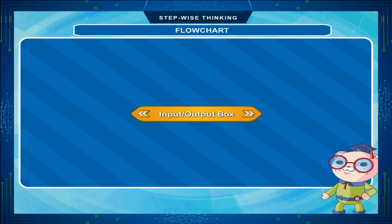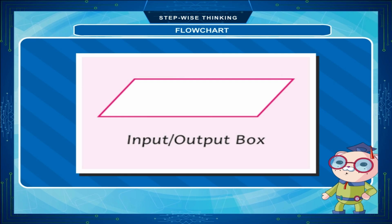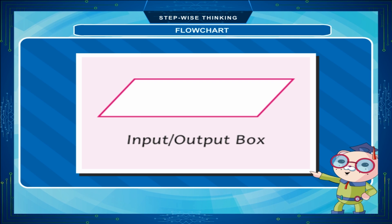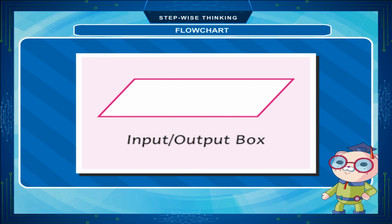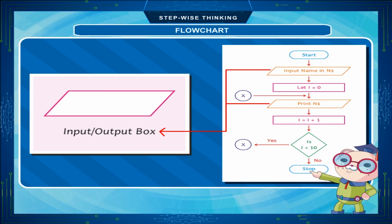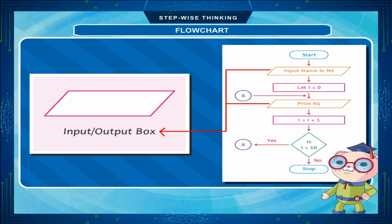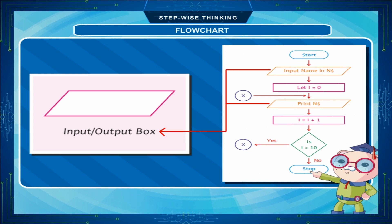Input or Output box: The input or output box in a flowchart is shaped like a parallelogram. To make any type of input in the computer or to display any type of output, this box is used. The statements like Input, Print, etc. of basic language are used to type inside this box.